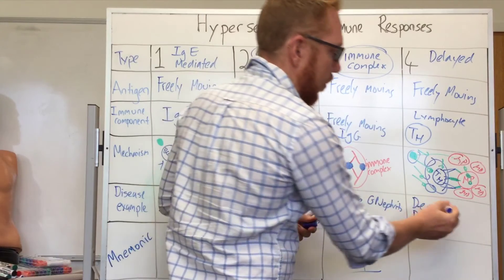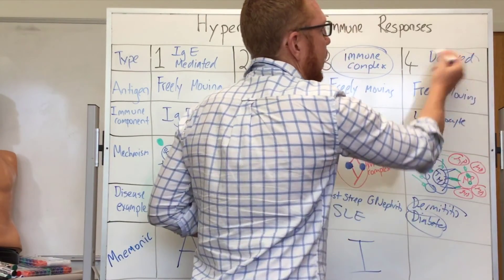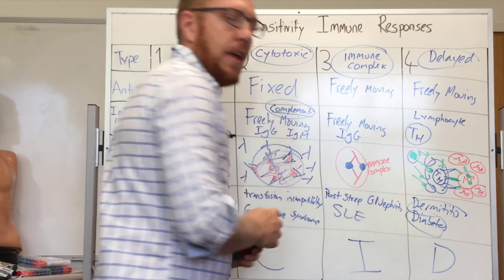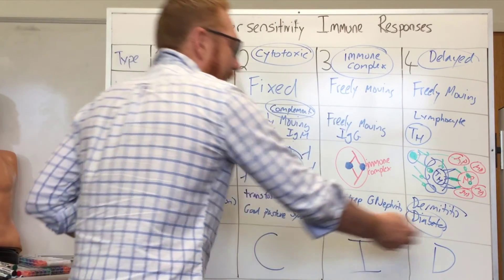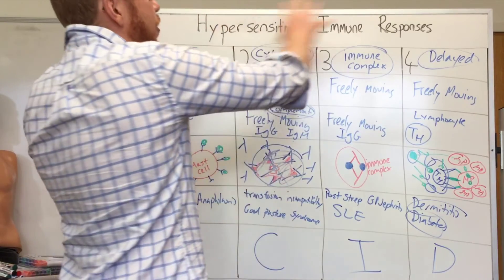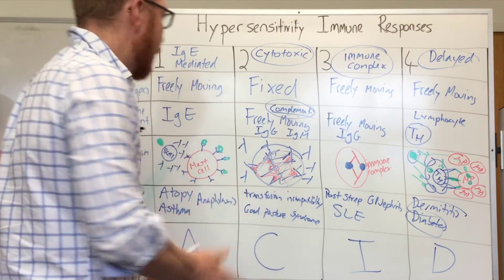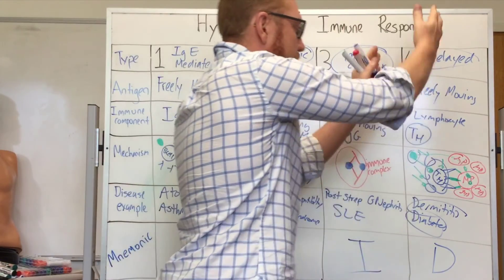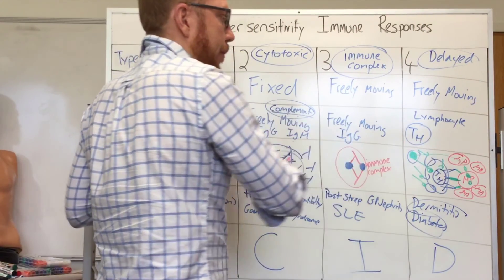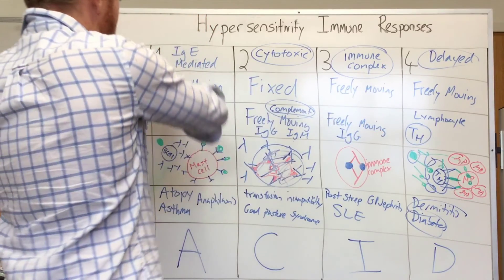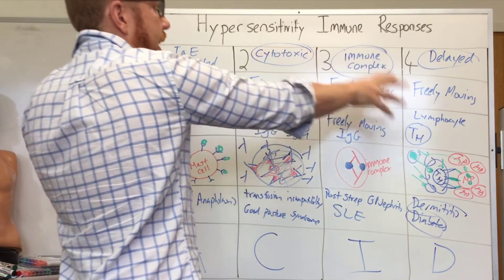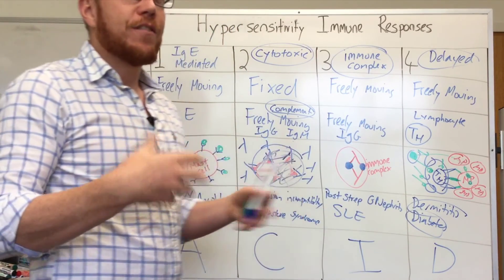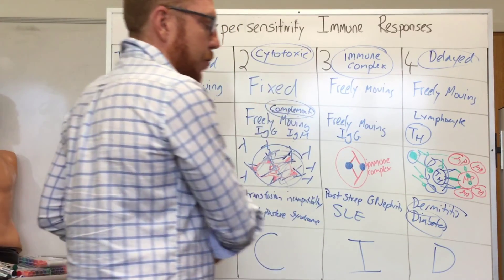Which gives us the mnemonic ACID. So hopefully when you think ACID now, you can remember the four types of hypersensitivity. We've got type 1, type 2, type 3, type 4. Hopefully you can give an example of their mechanisms and how they're different, how the antigen and immune complex react slightly different, and a few examples for each. If you find it hard to remember, always go back to the mnemonic ACID.